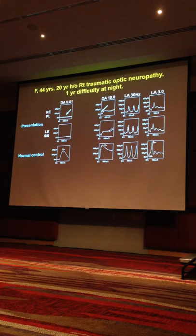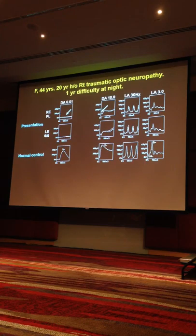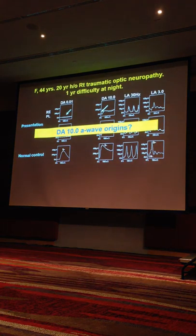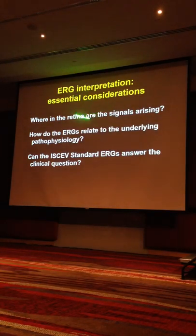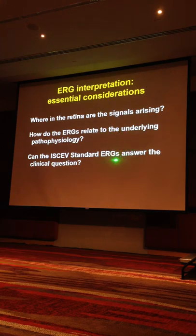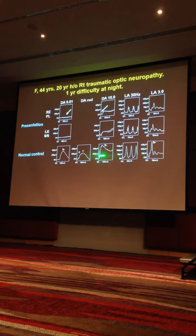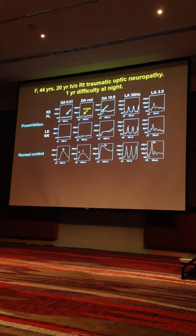But when we look at retinal function, the rod-specific ERG — the dim flash under dark adaptation — is completely undetectable, and the bright flash dark-adapted ERG is markedly subnormal. We have to then ask: where is this signal coming from? Are we looking at reduced rod function, or no rod function with signals coming from remaining dark-adapted cones? That has important implications for the underlying pathophysiology. When we use a red flash under dark adaptation, we get an early component from dark-adapted cones and a late component from rods. In this patient, we see a cone component but no rod component whatsoever.